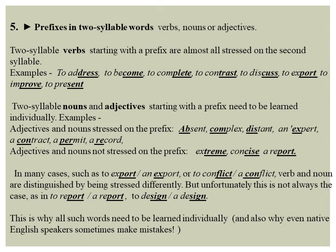Words like 'report' and 'design', whether used as verbs or as nouns, are stressed on the second syllable in both cases. This is why all such words need to be learned individually. The rule of stress does not apply to all words — it is a matter of experience, and you need to learn words individually to see where the stress lies. This is also why even native English speakers sometimes make mistakes. Word stress is complicated and cannot be governed by a single fixed rule.